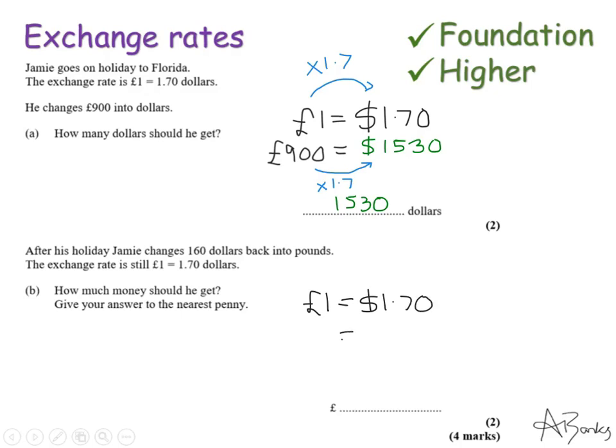And this time the information that they've given me is that he has $160. So I want to write this underneath this sign because my dollars are on the right hand side. So I'm trying to get back this time from the dollar side to the pound side. So to get back across this equation I'm going to have to divide by 1.7. So $160 divided by 1.7 will give me the answer.